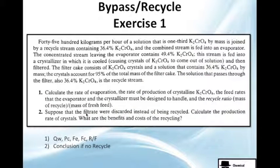Let's see an example. 45,100 kilograms per hour of a solution of K, 33% by mass, is joined by a recycled stream of 36% of K. The combined stream is fed into an evaporator. The concentrated stream leaving the evaporator contains 50%, this stream is fed into the crystallizer, causing crystals to come out of the solution. Crystals mean solids, so we're going to work with solids, take care.